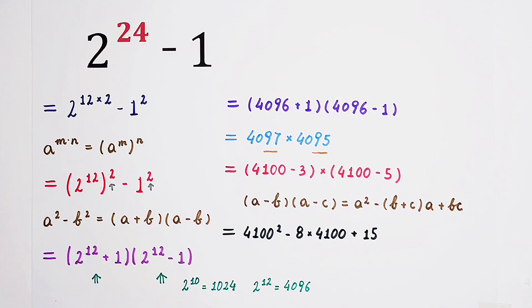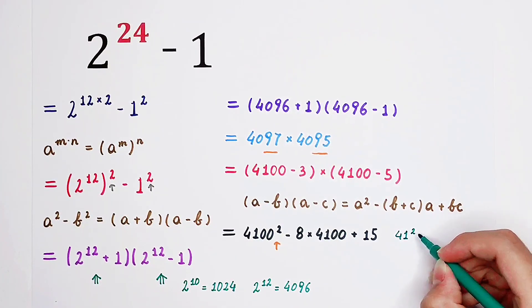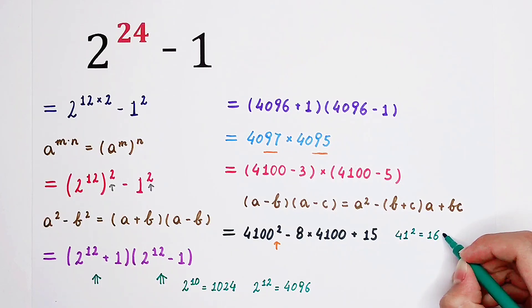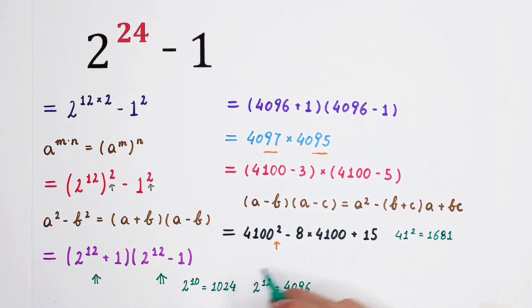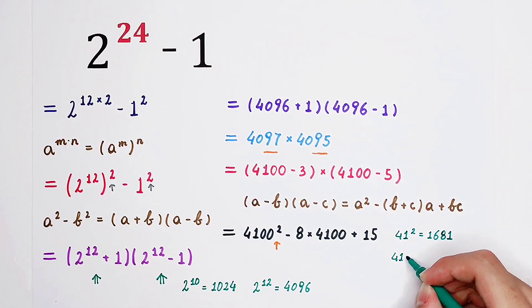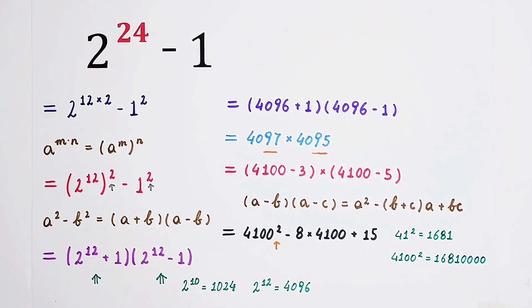So then evaluate. The difficulty is this guy squared. However, we know that 41 squared. What is it? It is 40 squared, then plus 2 times 40, and then plus 1. Note that 41 squared is 1681. So then 41 squared and then times 100 squared. That is 4100 squared. So then it is only equal to 1681. Add four zeros here.